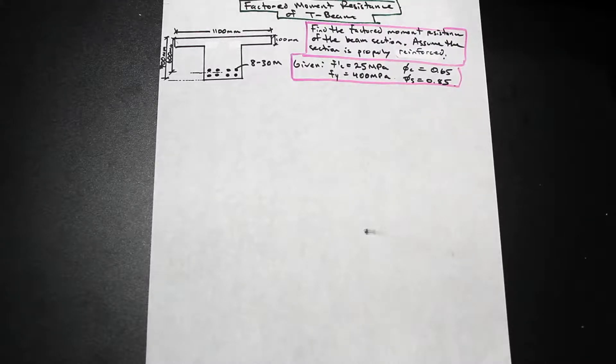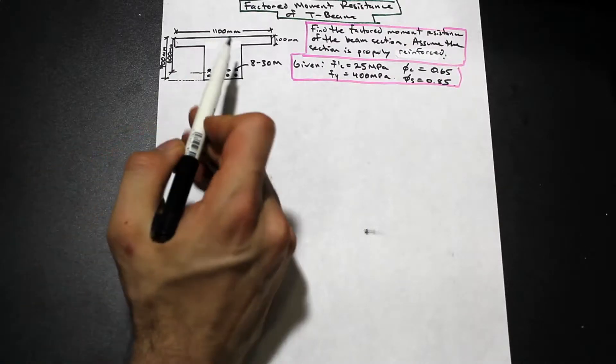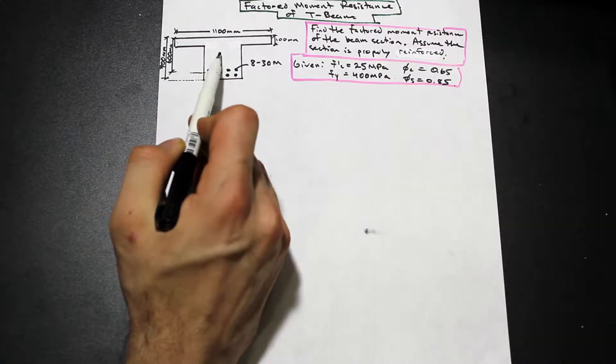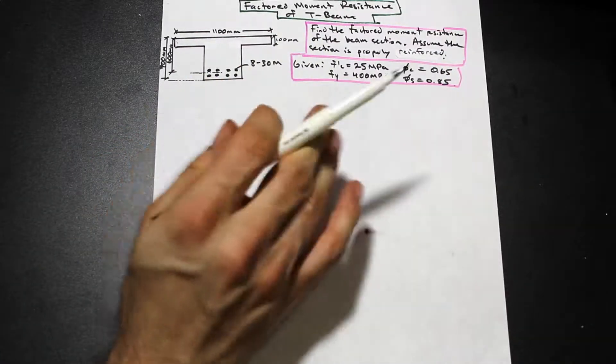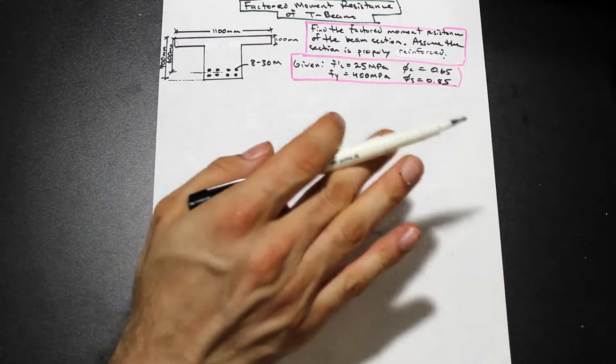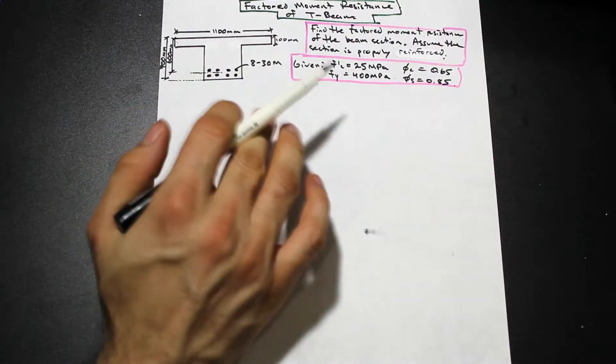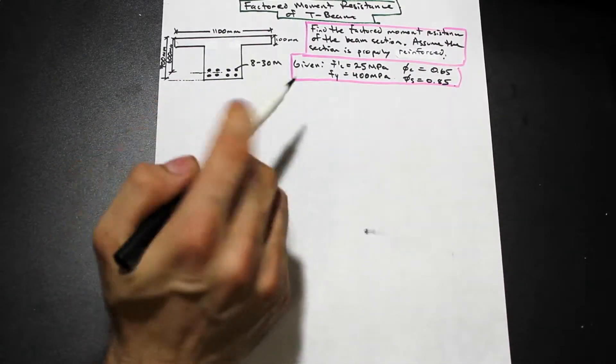There are two different sets of equations that you're going to want to use — either when the neutral axis is in the flange or when the neutral axis is in the web. We're going to do the web first and then we'll do another video on the flange so you can see the difference.